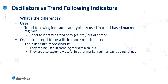Whereas oscillators tend to be a little bit more multifaceted, so their uses can be a little bit more diverse. Just like trend following indicators, oscillators can also be used in trending markets, as we've seen in previous episodes. But they also tend to be extremely useful in other market regimes such as trading ranges — and this is where trend following indicators are much weaker.